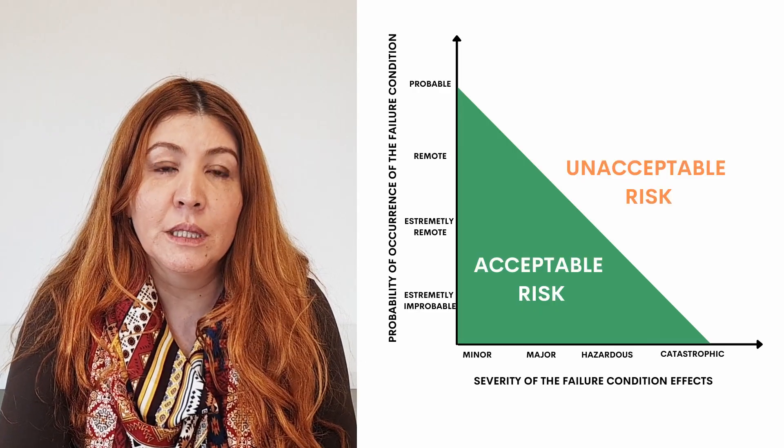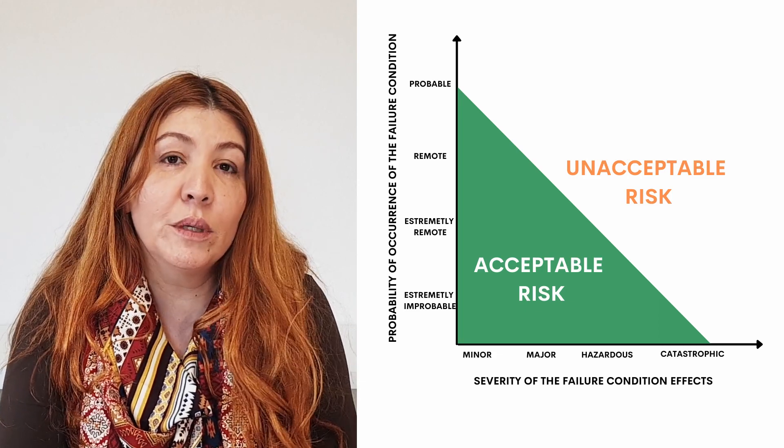We're talking about severity and probability, but how can we associate both to reach an acceptable risk level? It's simple: the more severe the failure condition, the lower its likelihood of occurrence must be. This means that catastrophic failure conditions must be extremely improbable, hazardous failure conditions must be at least extremely remote, and it is acceptable for minor failure conditions to be probable. Each one of those qualitative likelihoods of occurrence has a probability number associated with it, depending on the category of the airplane.